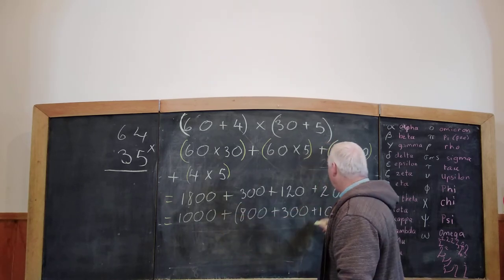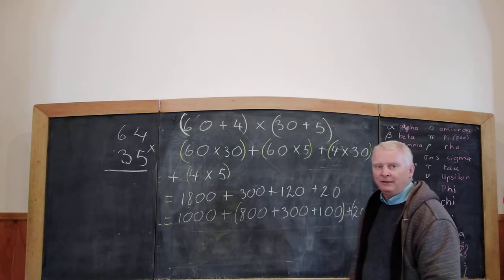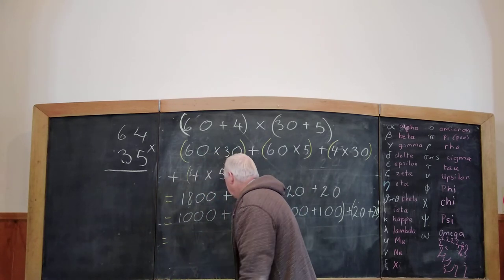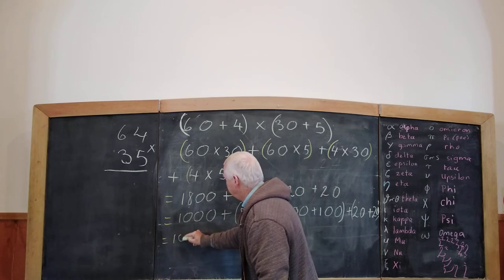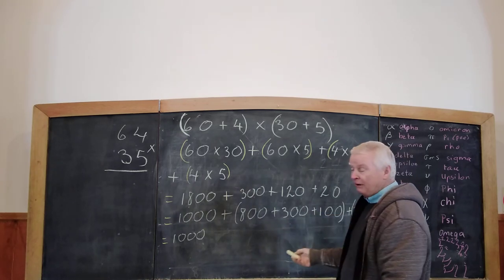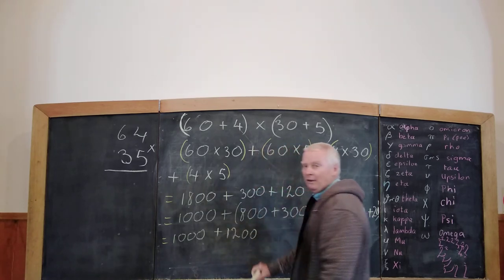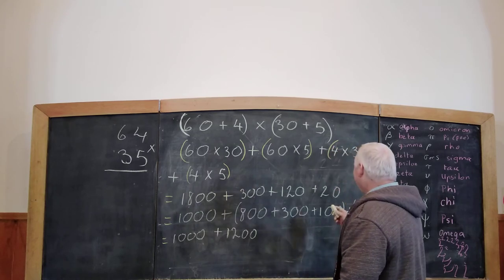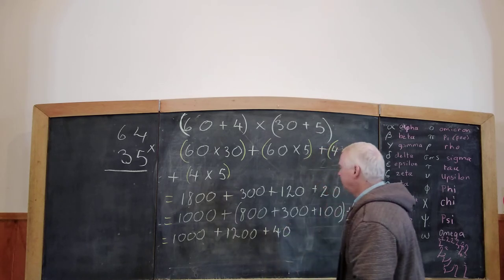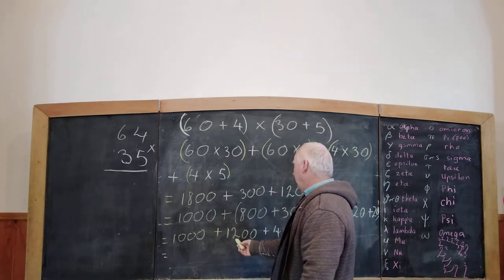So, your hundreds can be grouped together. And your tens can be grouped together. So, the next line equals. So, 1000. Then, 800 and 300, that's 1100. And an extra 100, that's 1200. Plus, 20 plus 20, that's 40.